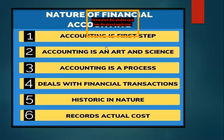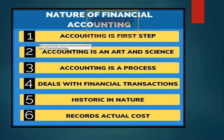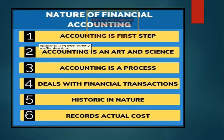The nature of financial accounting: accounting is an art and science used in every field. It is a process that deals with financial transactions — accounting always talks about money, cash, and bank. Accounting is historic in nature; it has a very old concept of collecting money and reporting at actual cost so we can record every commodity at its actual value.